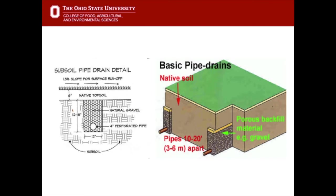Another thing we can do to improve native soil drainage is to install pipe drains. Pipe drains are installed in trenches and those trenches are backfilled with gravel. They are very helpful if there is a high water table, but they are not very effective at getting rid of surface moisture because the water still has to pass through the poor native soil to reach the drain. Unless the native soil is improved, the pipes are not very useful at shedding surface water, but they are still installed as a matter of course on many native soil fields.